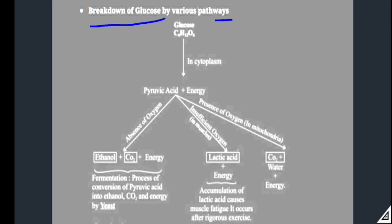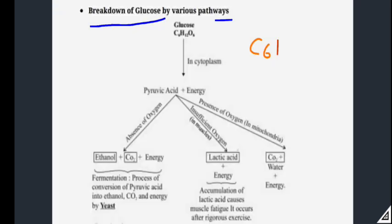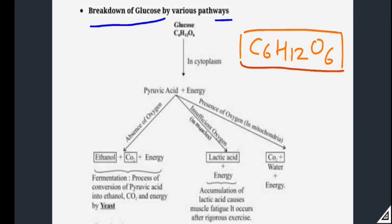The second topic is the breakdown of glucose by various pathways. This means which pathways our glucose breaks through. As we know, our body uses glucose. The formula of glucose is C6H12O6 — that is your glucose. Now we are going to discuss what method or which pathway of respiration is involved in breaking glucose. This glucose is present in the cytoplasm of the cells.